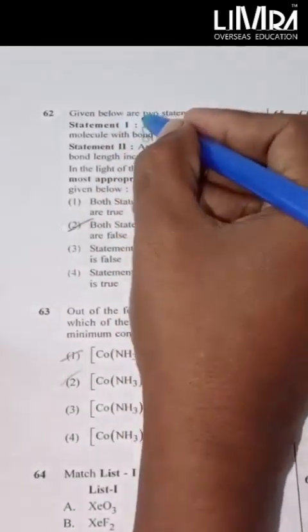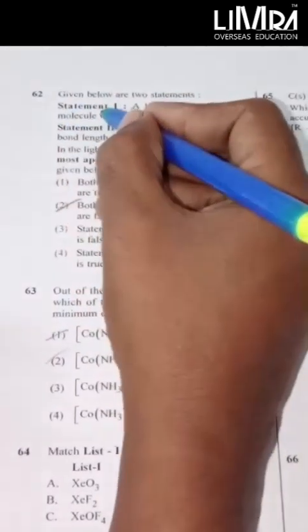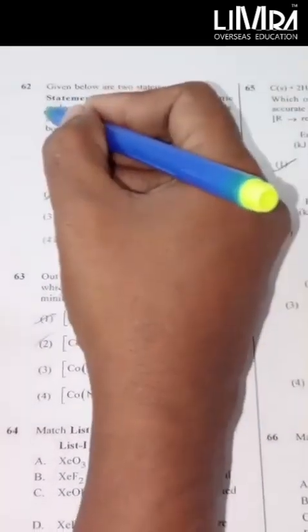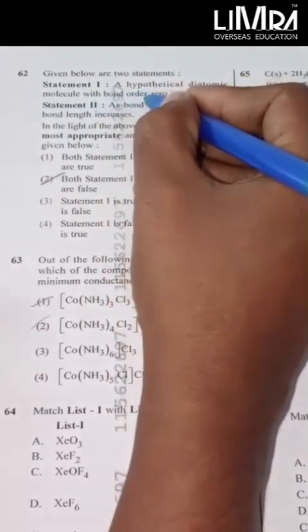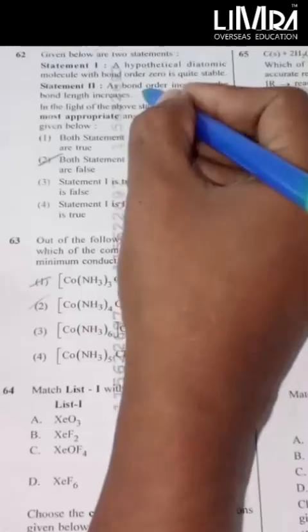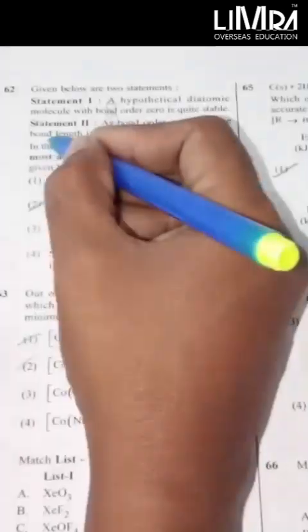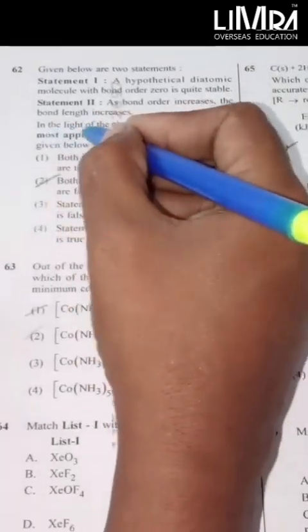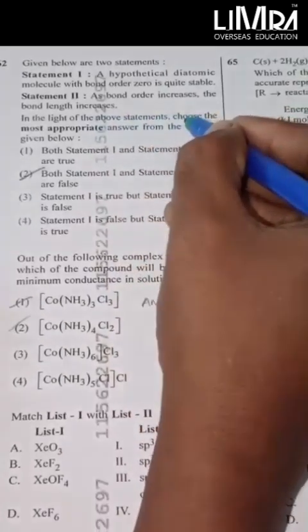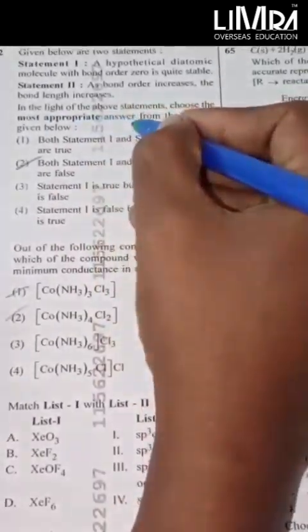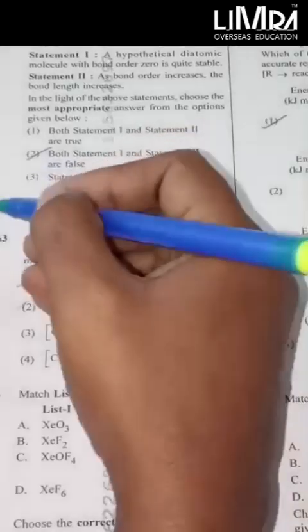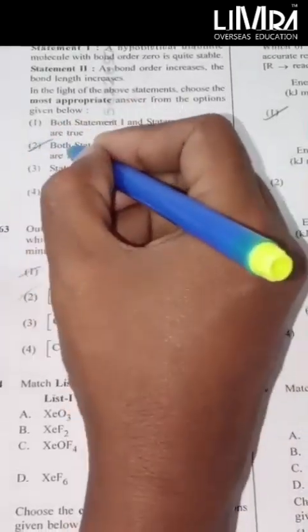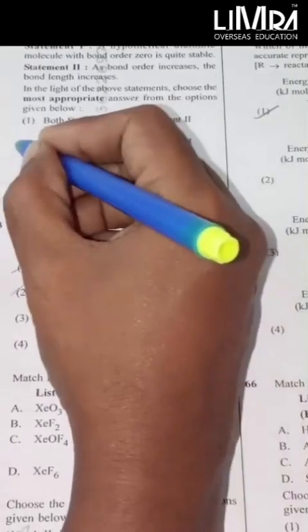Given below are two statements. Statement 1: A hypothetical diatomic molecule with bond order 0 is quite stable. Statement 2: As bond order increases, the bond length increases. In the light of the above statements, choose the most appropriate answer from the options given below. Both statement 1 and statement 2 are false.